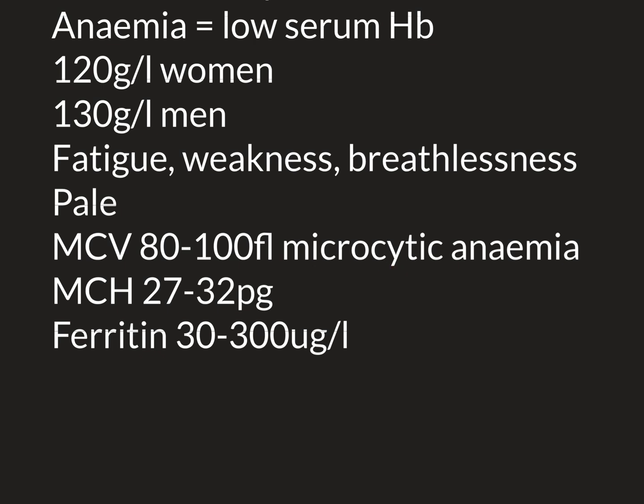The lab also measures how much haemoglobin each red blood cell contains, averaging this across many cells — this is the MCH, or mean cell haemoglobin. Normally this is between 27 and 32 picograms of haemoglobin per red blood cell. In iron deficient states, the bone marrow produces red blood cells containing less haemoglobin, so in iron deficiency anaemia you expect to see a low MCH. Overall, if a patient is anaemic with red blood cells that are too small and contain too little haemoglobin, this is highly suggestive that the cause is iron deficiency.